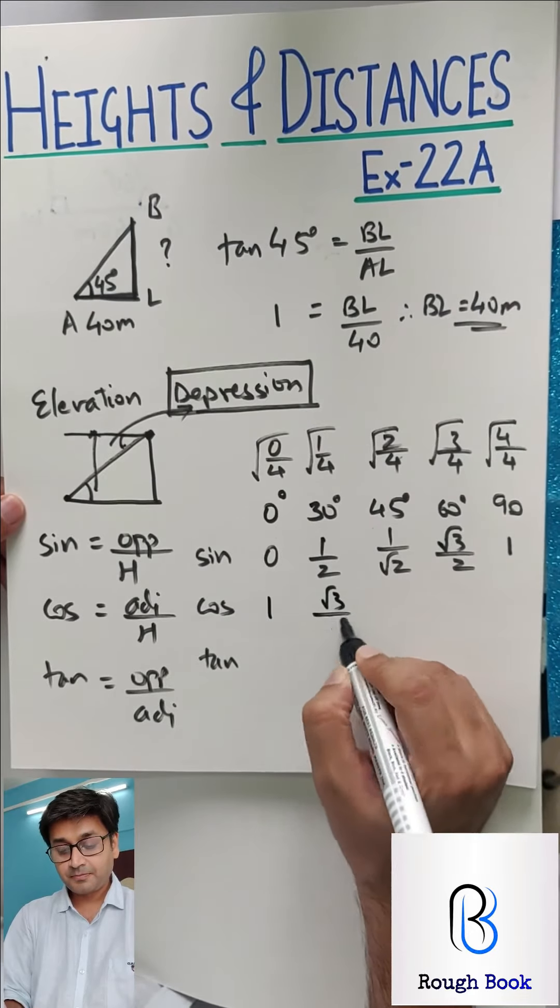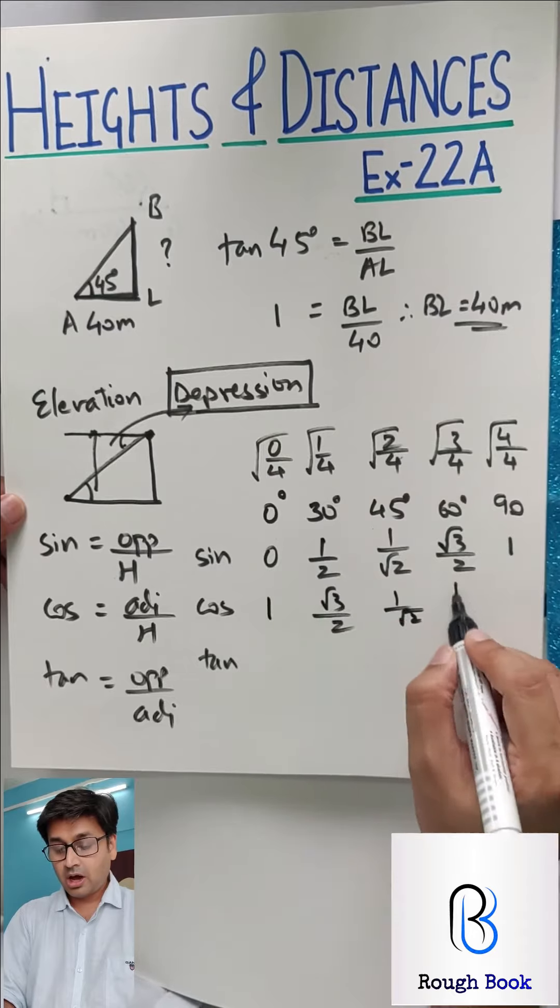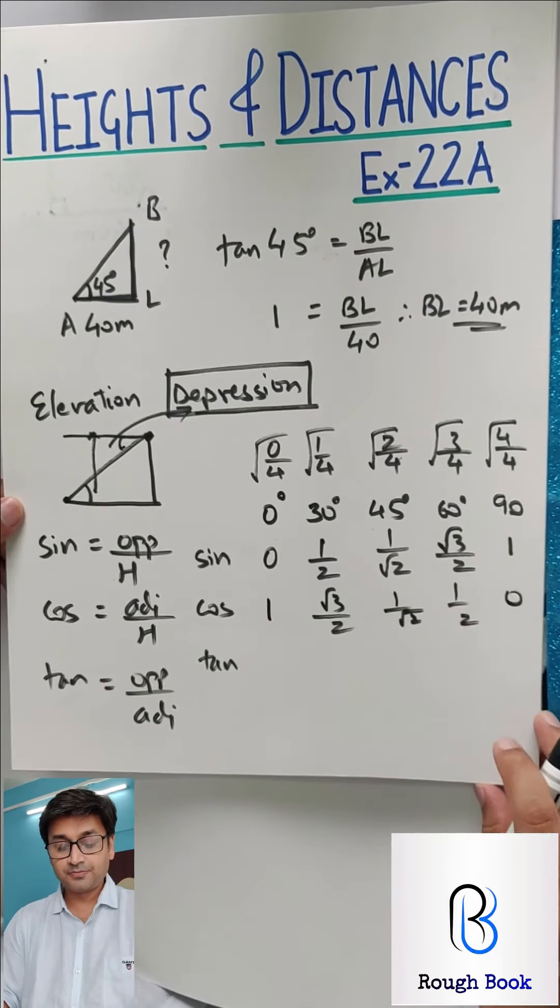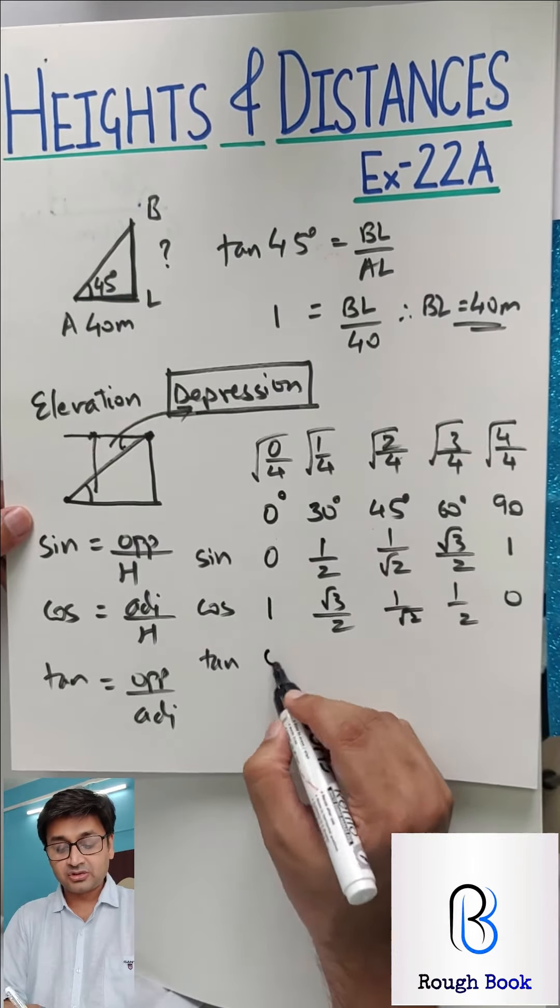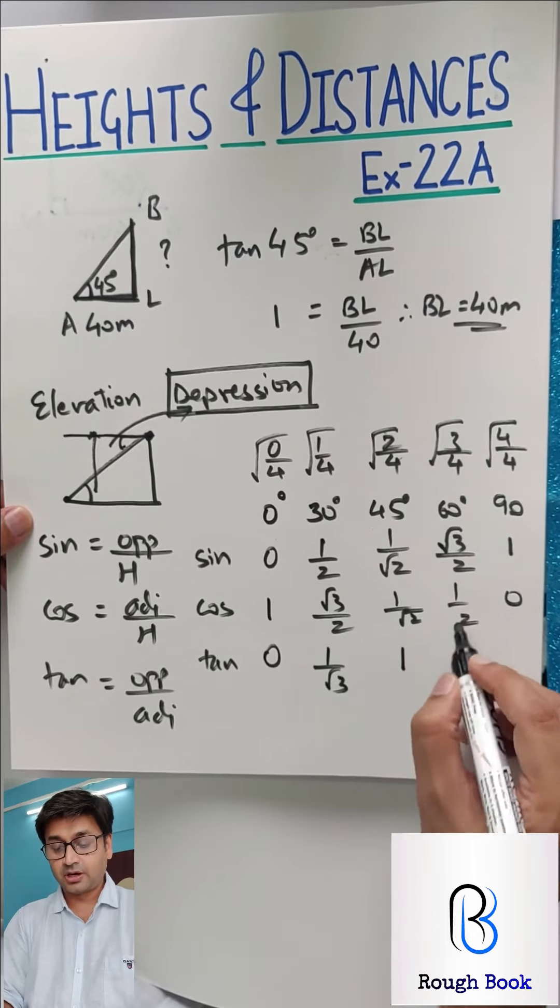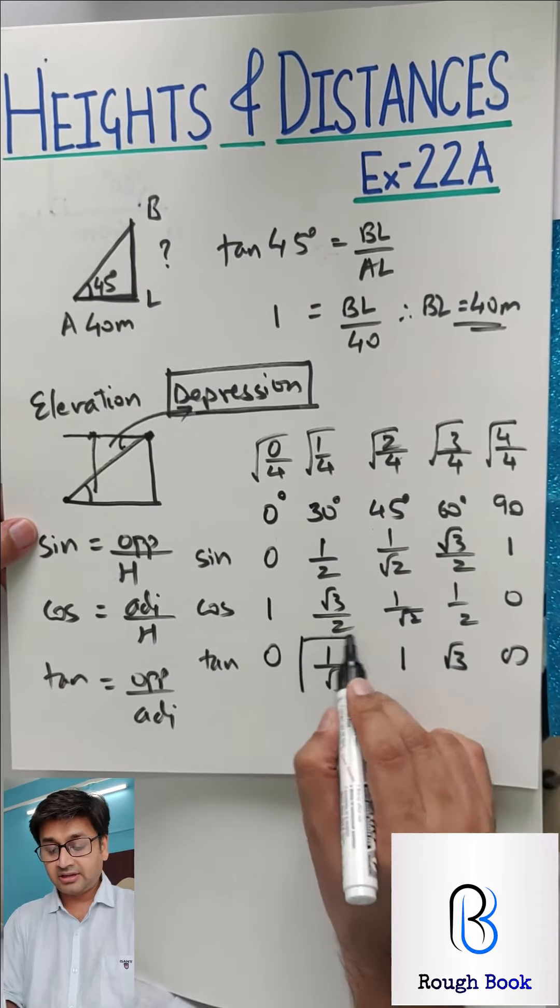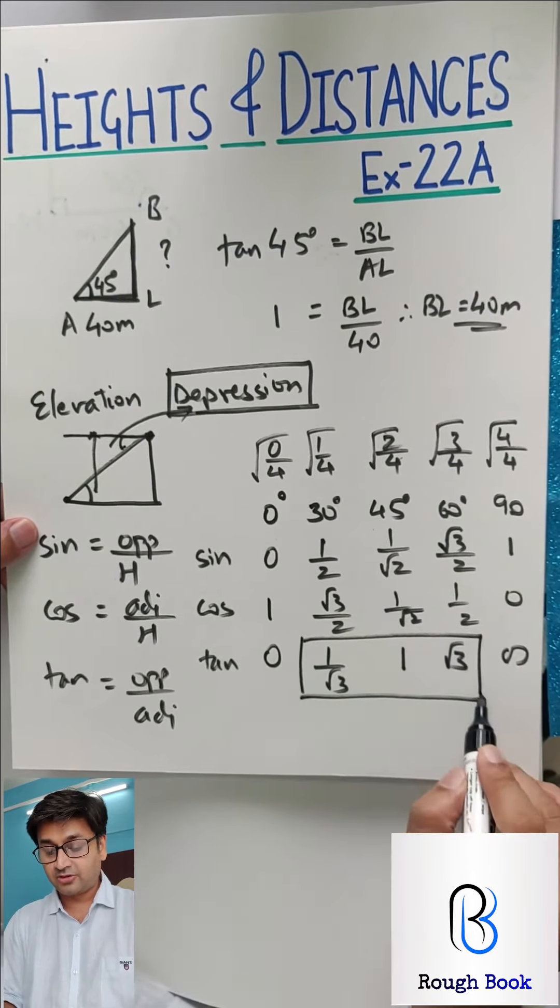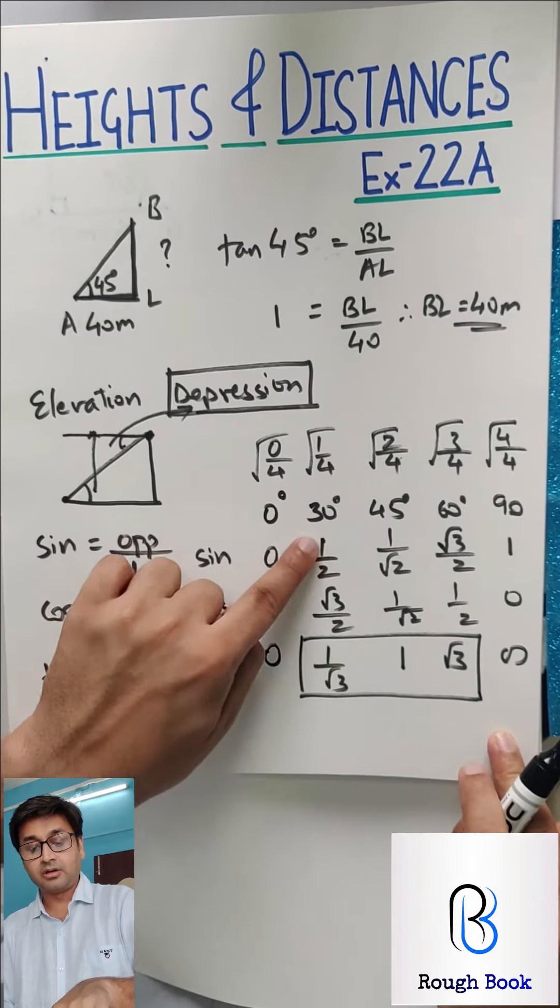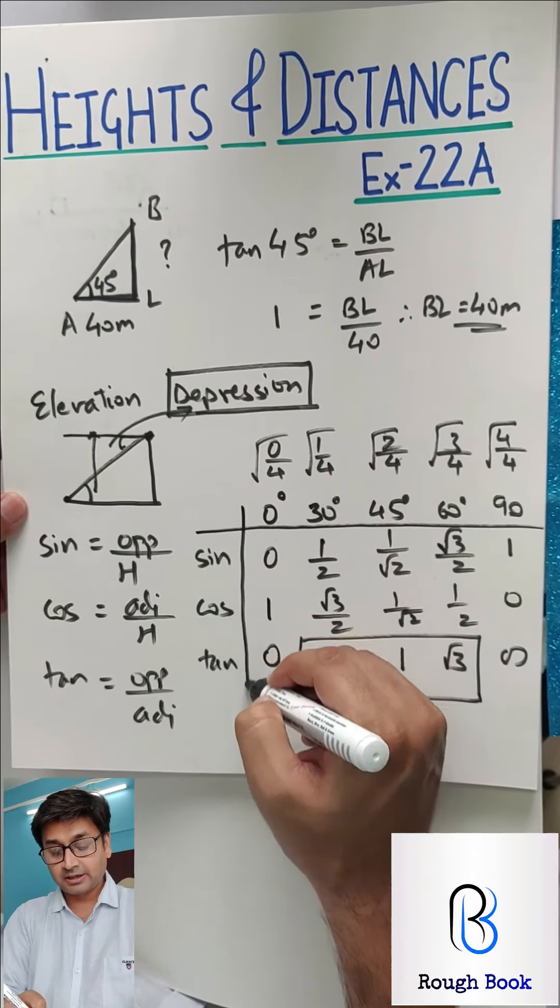This was done in standard 9. If you remember how to do it, 0, 1, 2, 3, 4, divide by 4 each term and take the square root of each term. Cos is exactly opposite of all this. So 1 comes here, root 3 by 2, 1 by root 2, half and finally 0. And tan is division of these two, that is 0, 1 by root 3, 1, root 3 and infinite. Out of that, these three are very important. Most of the times we use tan 30, 45 and 60.